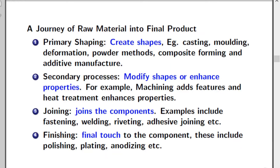All the manufacturing processes are classified into four categories that help in converting a raw material into a final product. The first category is called primary shaping processes, where basic shapes are created. These include casting, molding, composite forming, and powder metallurgy. The basic purpose of primary shaping is to create a primary shape.